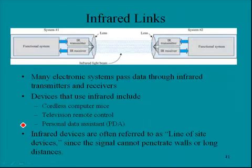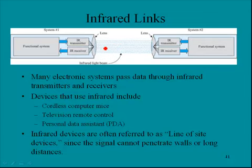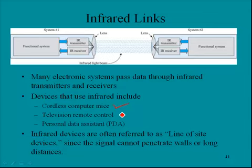Then we have infrared. Many electronic systems pass data through infrared transmitters and receivers. Here you see a picture of a transmitter and a receiver, with dotted lines indicating the infrared signal being passed between them. Devices that use infrared include cordless computer mice — prior to infrared, they were all mechanical, but the cordless type are nicer because dirt doesn't clog the ball. Other examples include television remote controls and PDAs — personal data assistants.